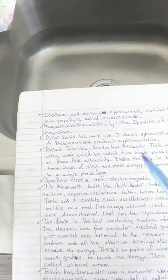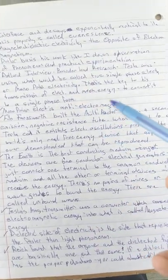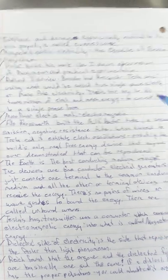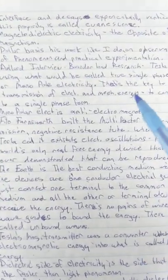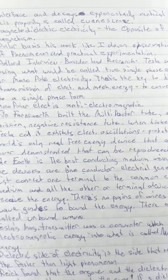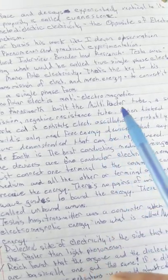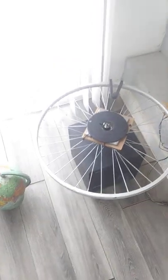More from Dollard. Magneto-dielectric electricity is the opposite of electromagnetism. In a Dollard interview with Borderland Research, he says that Tesla was using what would be called true single-phase electricity or monopolar electricity. This is the key to his transmission of electricity and mechanical energy — to convert it to a single-phase form. Monopolar electricity is anti-electromagnetic. It's doing the same thing as taking my driver magnet or my wheel against the other driver magnet — you're taking two and putting them against each other.